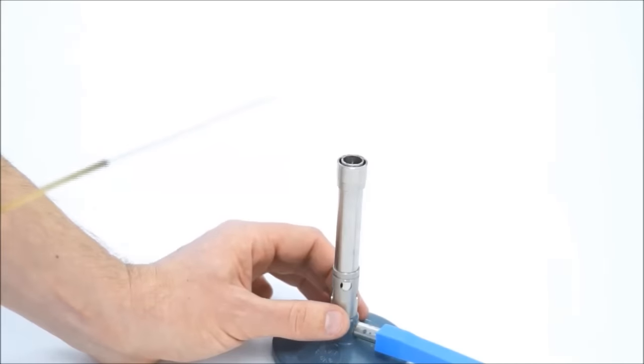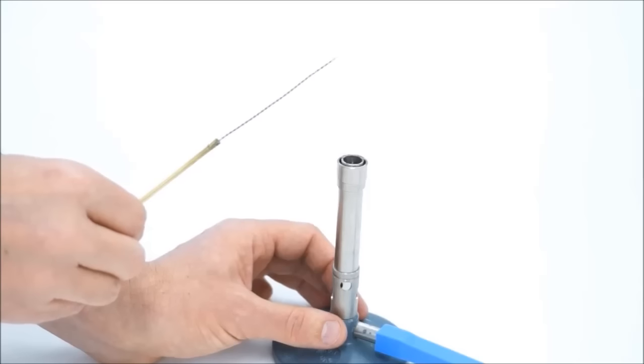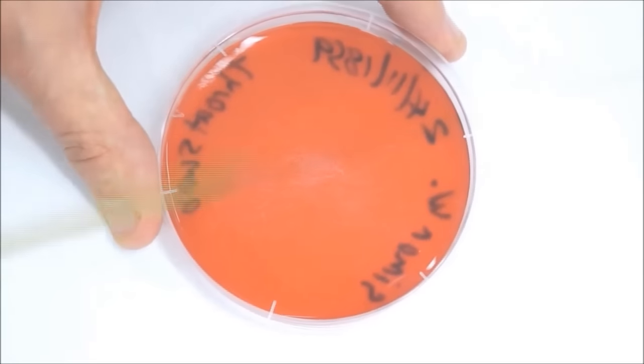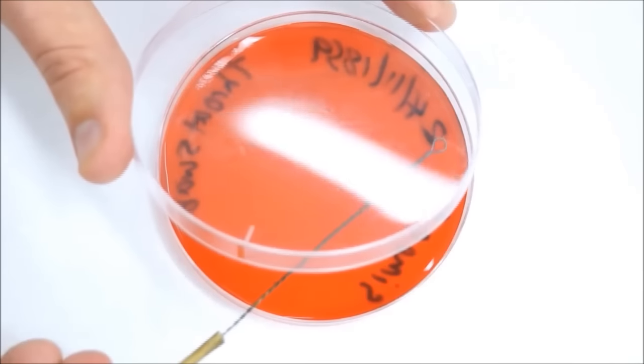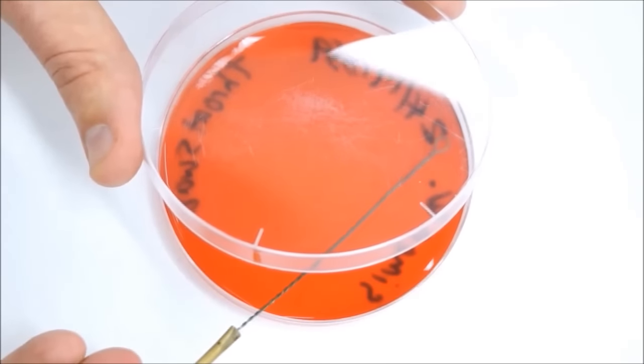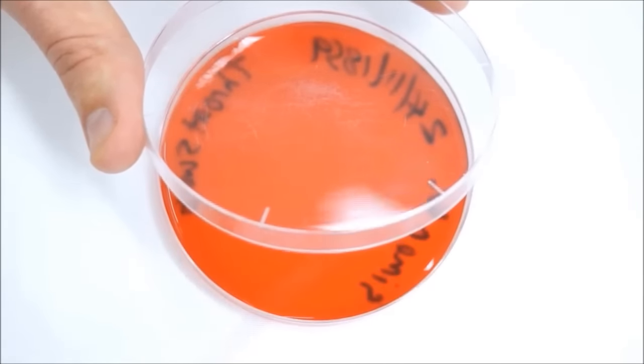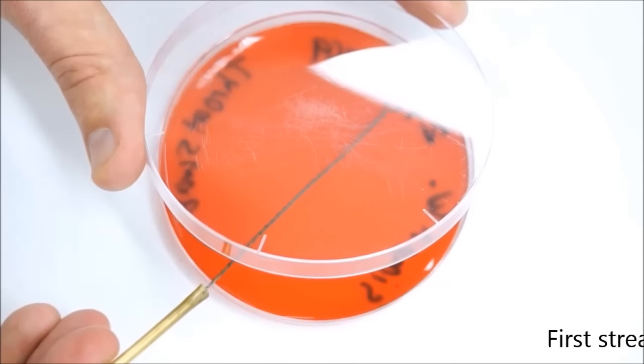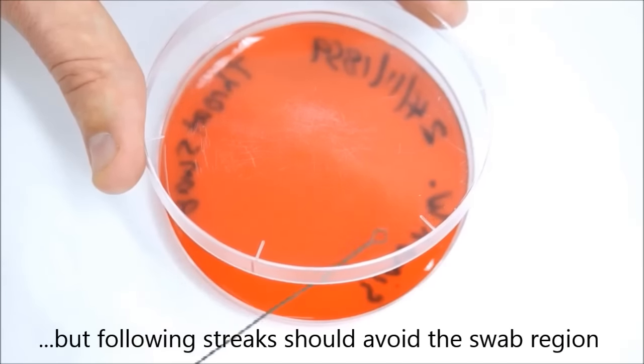Now you should use a Bunsen burner to sterilize the loop. Just go to the blue flame and make sure you get that nice and red hot. Kill any bacteria that are there. Back to the yellow flame. That loop is really quite warm and any bacteria that touches it is going to die. So cool it down on the agar over on the edge somewhere. You might hear it hiss. Now you get that loop and take one streak through the swab region across, and back and forth until you've done about a quarter.